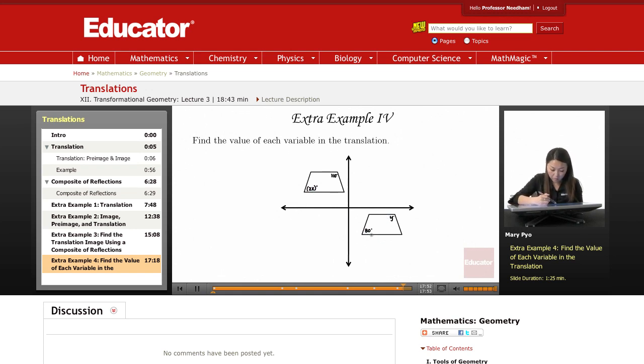So that means this angle and that angle are corresponding, and they're congruent, so I can make them equal to each other. So 2x is equal to 80. To solve for x, I just divide by 2. So x is 40.